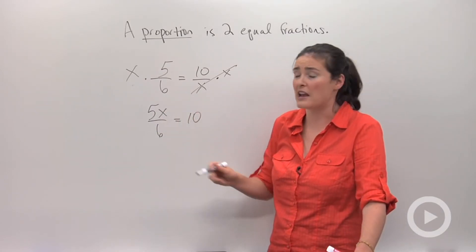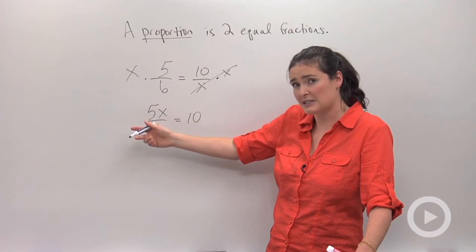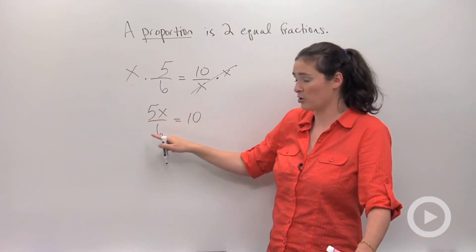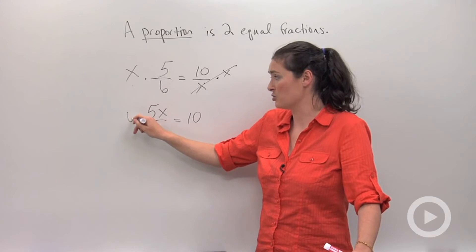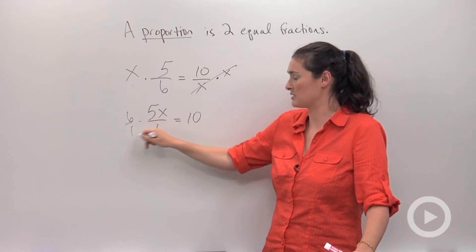And from there you would go through and either multiply by 6 fifths, which is the reciprocal of this, or you could multiply in two different steps, multiply by 6 over 1.